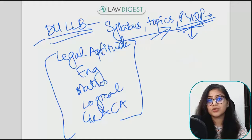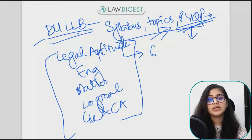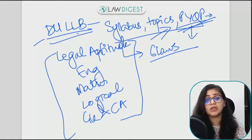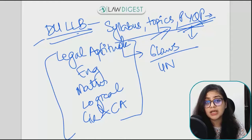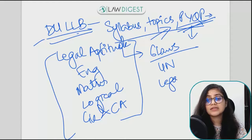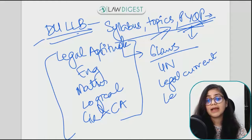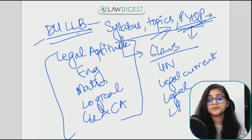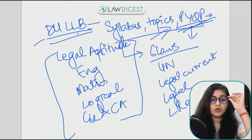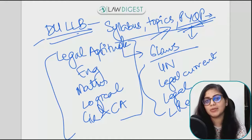Talking about Legal Aptitude — there are many things covered in this section, such as basic laws: Constitution, Contract, Tort, IPC, Family Law, and IPR Law. Besides that, we have questions from the United Nations, legal current affairs — which includes important judgments and important bills and acts that have been passed — legal maxims and terms, and legal reasoning. All these areas are in our legal aptitude section.